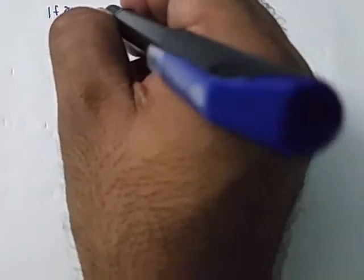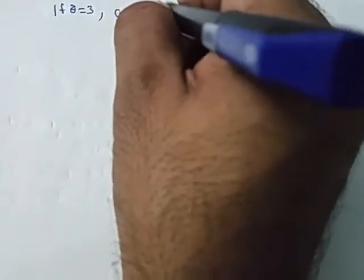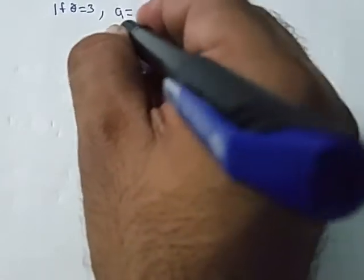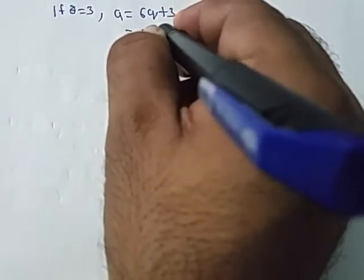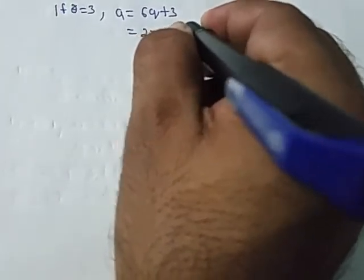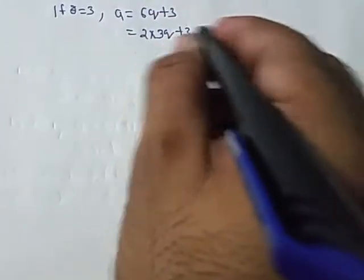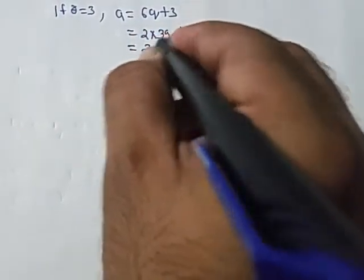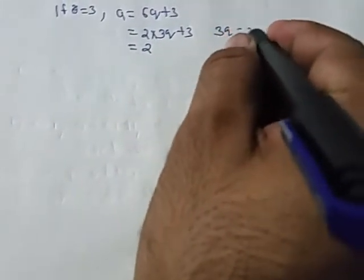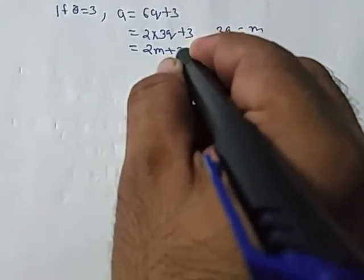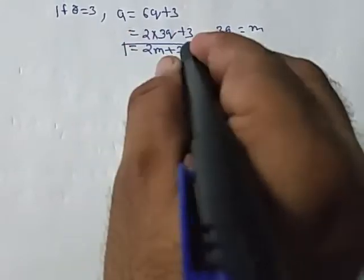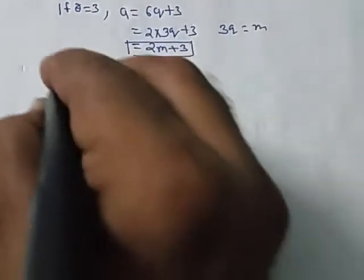If r equals 3, a equals 6q plus 3, which means 2 multiplied by 3q plus 3. If 3q equals m, then we get 2m plus 3, and this equation is not divisible by 2. So 6q plus 3 is an odd integer.